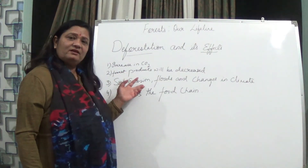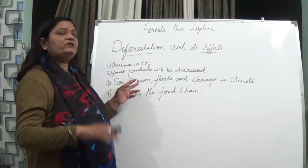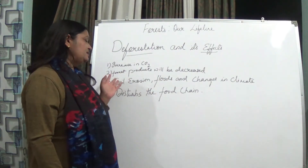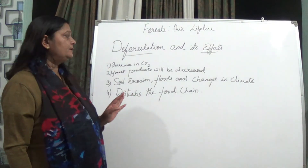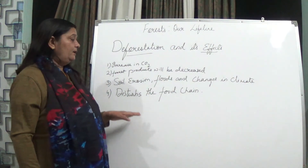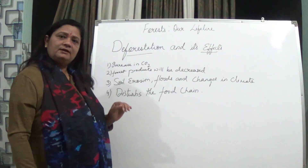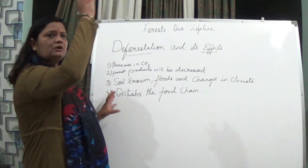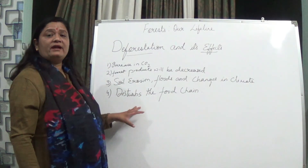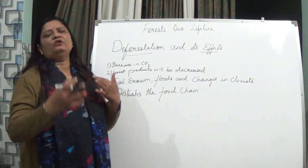Soil erosion will take place and floods will occur — heavy rains will wash away soil and cause flooding, leading to climate change. Deforestation also disturbs the food chain — since food chains start from plants, if plants are decreased, all animals directly or indirectly dependent on them will also be affected, and the whole food chain will be disturbed.